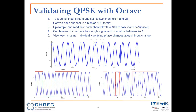In Octave, I took a 28-bit input stream, split it into two channels, and converted each channel to bipolar non-return-to-zero format. Then I used a 16 kHz baseband — somewhat arbitrarily — to modulate each channel: one with a cosine and the other with a sinusoid, then combined both channels into one signal and normalized it. The top image shows the combined signal, and the two below show the I and Q channels individually, with the red line indicating the input data. At each bit transition you can see the phase transition, confirming the scheme is working correctly.